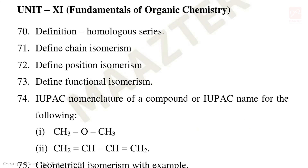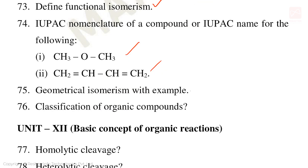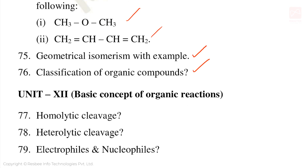Also in Unit 10, metallic bond, molecular orbital diagram for nitrogen and oxygen — these are important golden questions. Unit 11: Fundamentals of Organic Chemistry — important 2 mark and 3 mark questions include homologous series definition, and isomerism topics: chain isomerism and position isomerism.